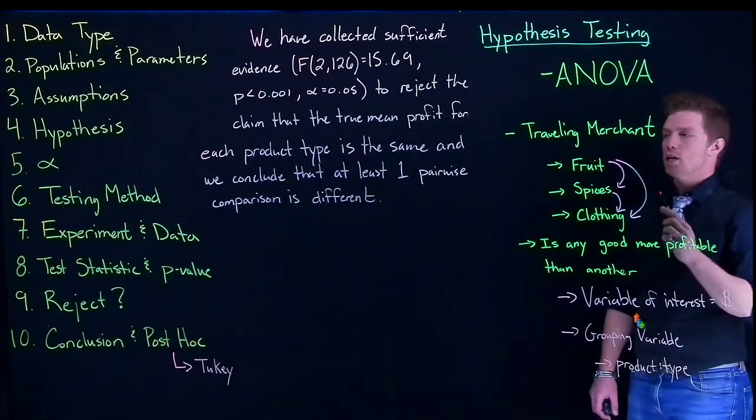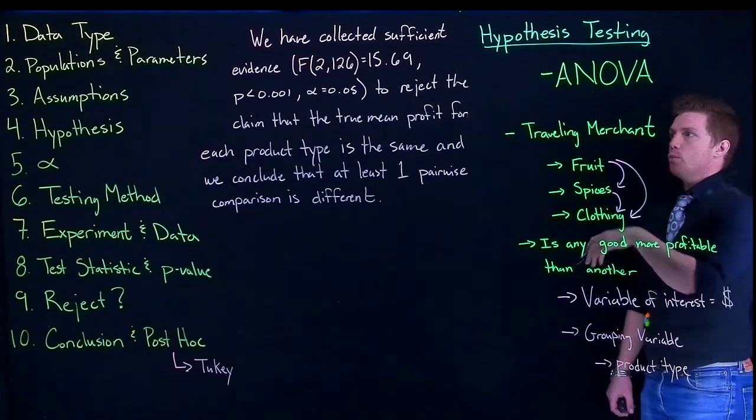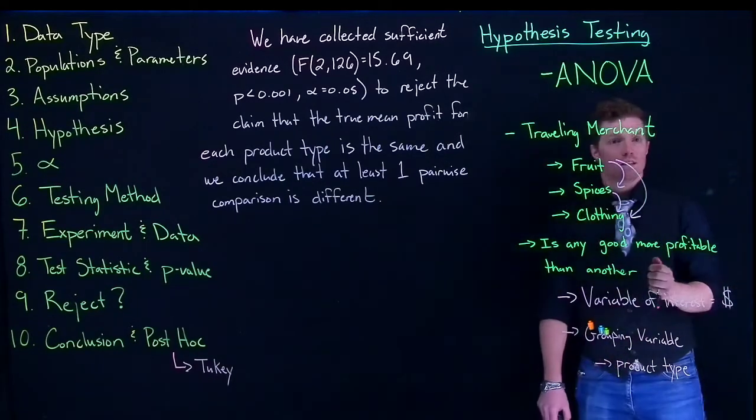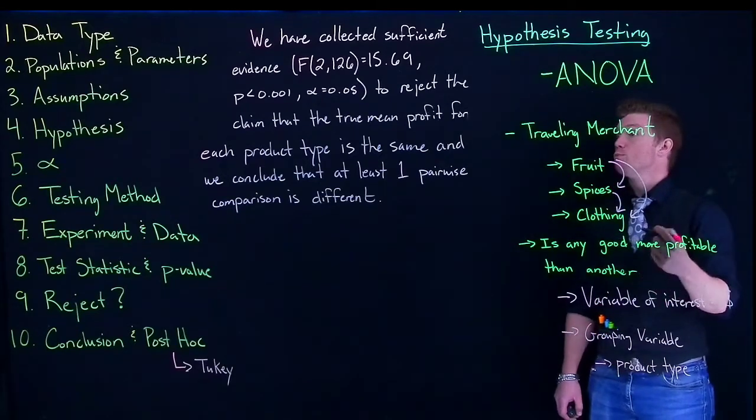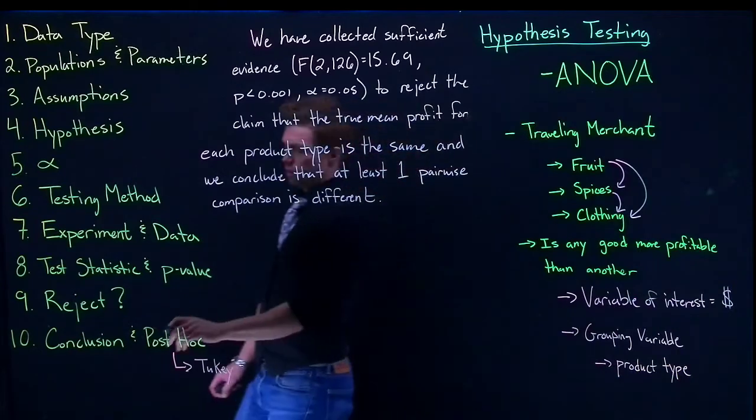So we basically are just rejecting our null hypothesis and concluding our alternative, and we include our test statistic, our p-value, and our alpha. So we're good up to this point. So we've done our conclusion.